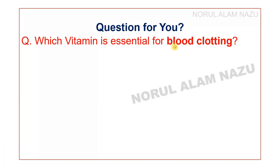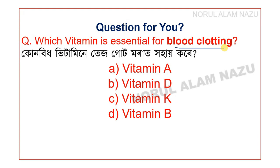Which vitamin is essential for blood clotting? Options are Vitamin A, D, K, and B. Please put your answer in the comment box.